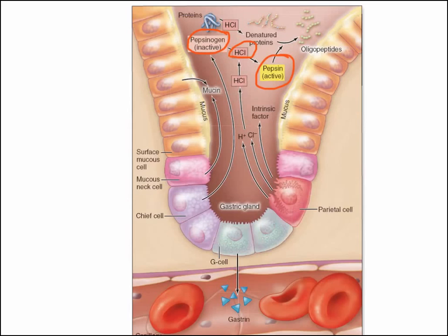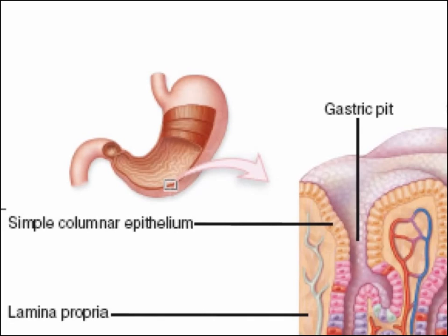The parietal cells also secrete ghrelin, which as you probably know is involved in appetite. As the stomach becomes more empty, the parietal cells will secrete ghrelin, particularly in the fundus region. When the stomach is empty, this fundus region is above anything in the lower portion of the stomach, so as there's less food in the stomach, the parietal cells in the fundus region begin to secrete ghrelin, which stimulates appetite.